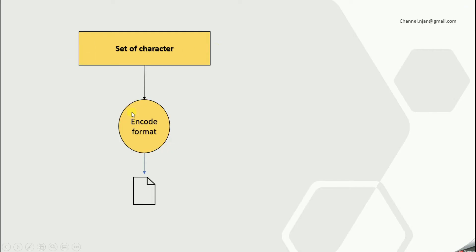Consider you have a set of characters and a specific encoding format. The encoding and decoding is not unique to one particular format — in the industry there are multiple encoding and decoding formats. So consider you are applying one encoding format; based on this format your characters get converted to an encoded string. You have the set of characters, the encoding format takes the input and gives the output as a new encoded string.